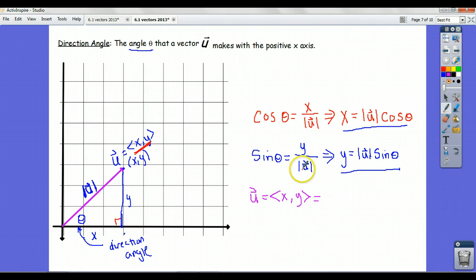the x-coordinate and the x-component is the magnitude times cosine of theta, and the y-component is the magnitude times sine of theta.